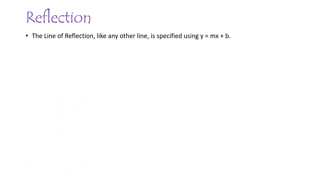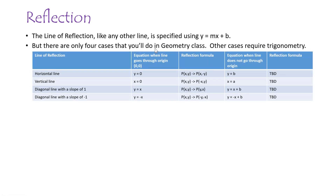Next is reflection. You are reflecting the figure across a line of reflection like a mirror, and this line can be any line. You specify any line as Y = MX + B, where M is the slope and B is the Y-intercept. But there are only four cases you'll do in geometry class because other cases require trigonometry. The four lines of reflection are: a horizontal line, a vertical line, a diagonal line with slope 1 (upward), and a diagonal line with slope -1 (downward sloping).